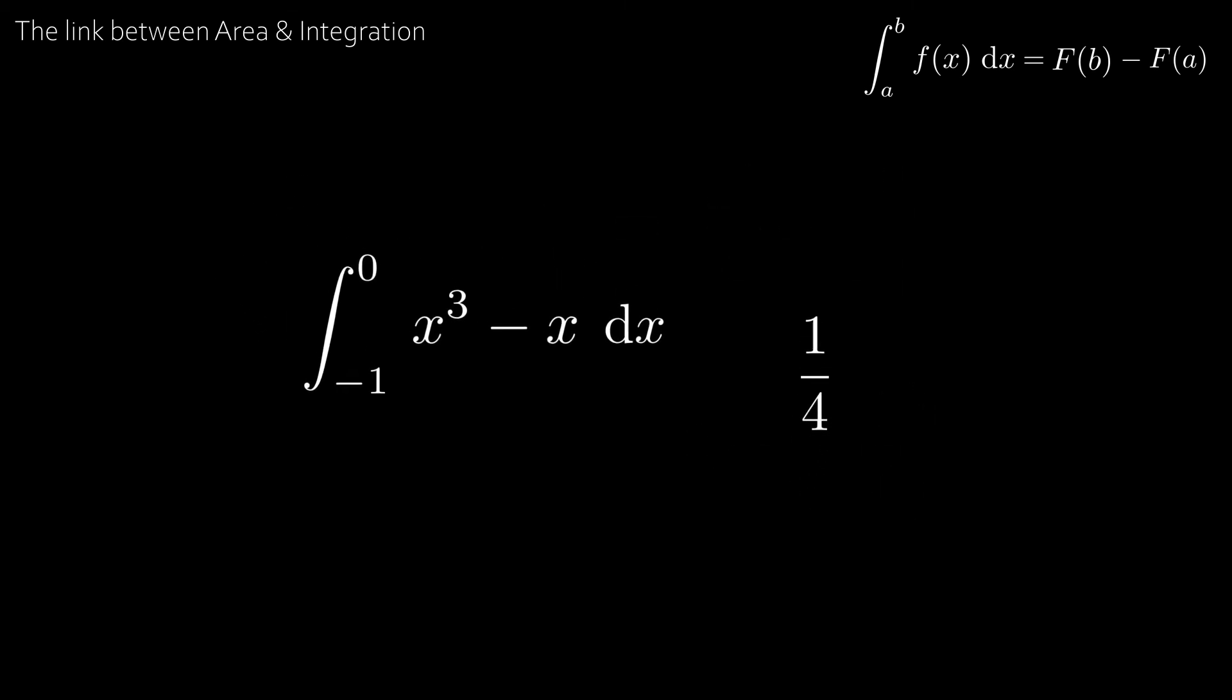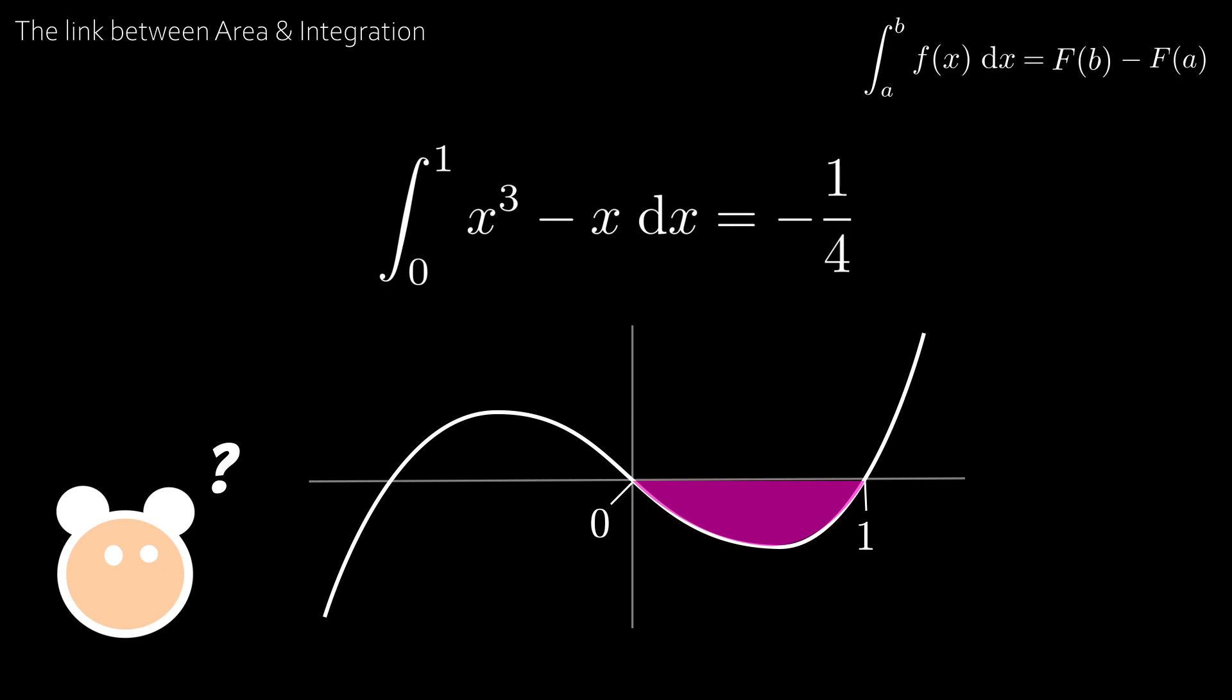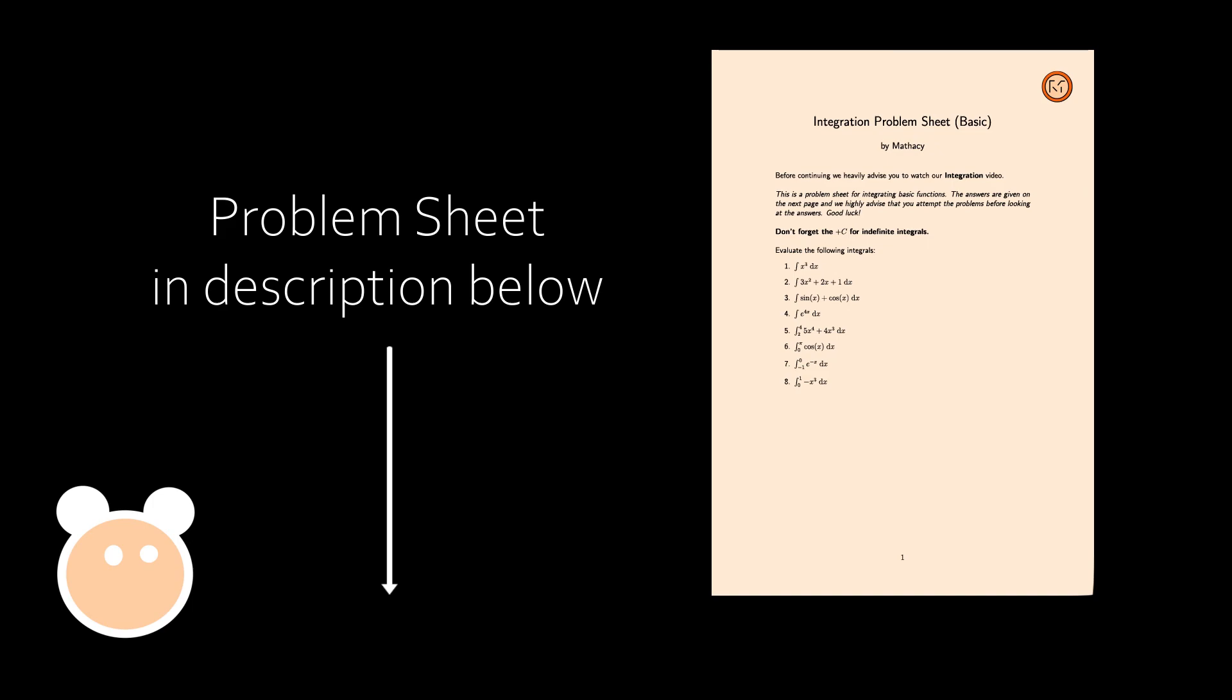Let's now take our curve again but instead find the area between 0 and 1. And this is equivalent to the integral between 0 and 1 of x cubed minus x dx. And when you evaluate this you get minus one quarter. But how can you have a negative value for the area? And to get a grasp of this check out our problem sheet in the description below. Which goes through examples and explains the negative area concepts.